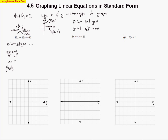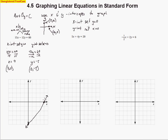Now I'll find the y intercept by setting x equal to 0, because all y intercepts always have an x value of 0. That takes out the 15x term, and I'm just left with negative 12y equals 60. Dividing by negative 12, y equals negative 5. So this point is (0, negative 5) — it's where the line crosses the y axis, way down here. This method gives us these two points and we can draw a line fairly quickly through them.